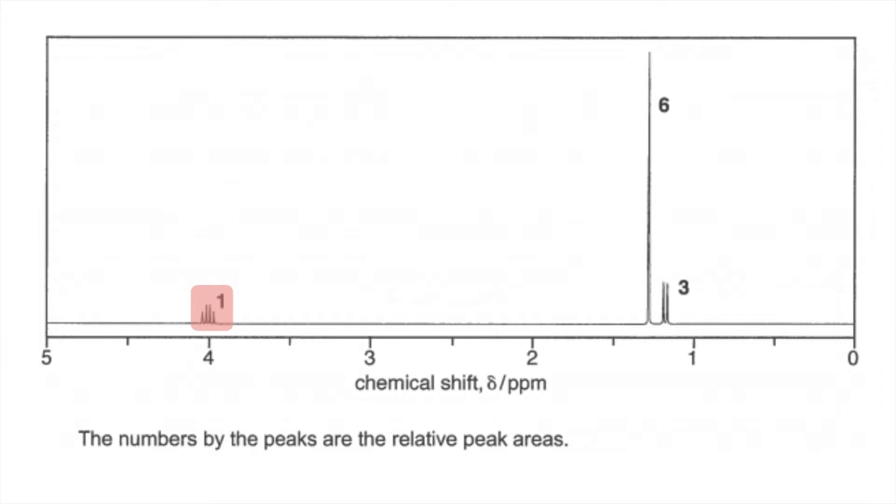So first thing I would say is it's a quartet. So what does that mean? The hydrogens causing that peak must be adjacent to 3 hydrogens or a CH3 group. The area of 1 means there's one proton in the environment. And that shift value of 4 means the environment is HC to O. Basically, that little part of the molecule looks like that. So that's causing the peak. And the fact that it's adjacent to those three means it's split into that quartet.